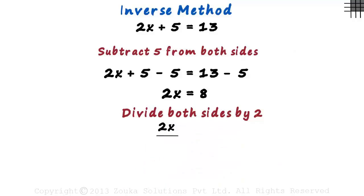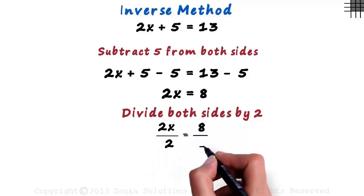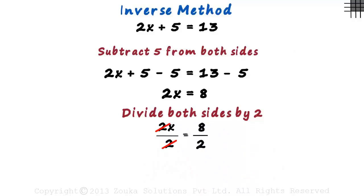We get 2x by 2 equals 8 by 2. 2 cancels out on the left-hand side, and 8 by 2 equals 4. Hence, we get x equal to 4.